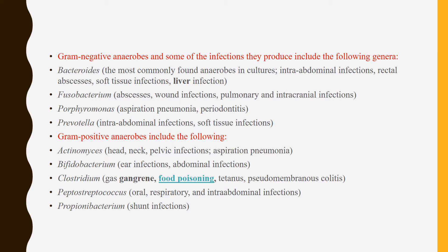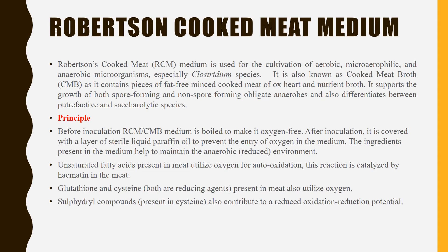On the basis of the specimen, you can choose the agar medium for the isolation of the organism. The most commonly used medium is Robertson Cooked Meat medium for the isolation of anaerobic microorganisms. It is used for cultivation of aerobic, micro-aerophilic, and anaerobic microorganisms, especially Clostridium species. It is also known as cooked meat broth as it contains pieces of fat-free minced cooked meat of ox-heart and nutrient broth.